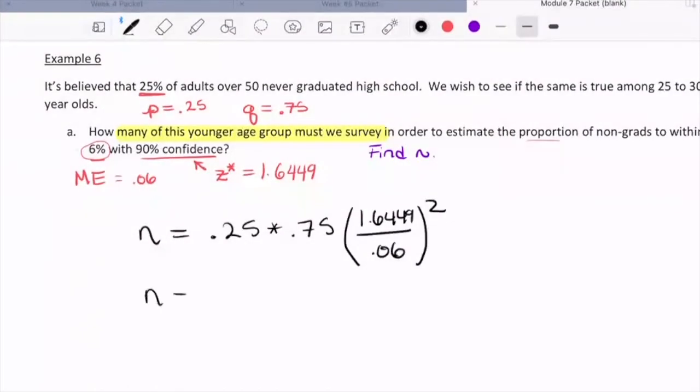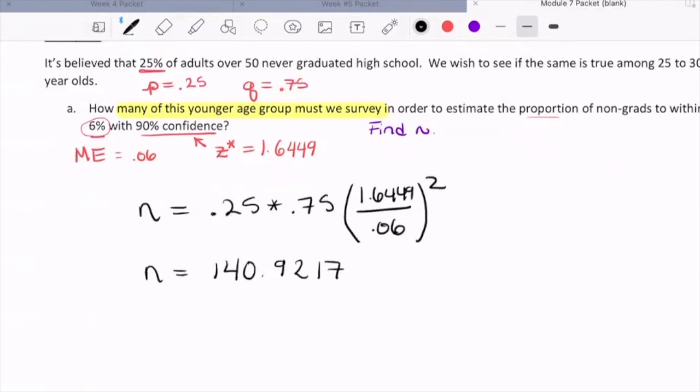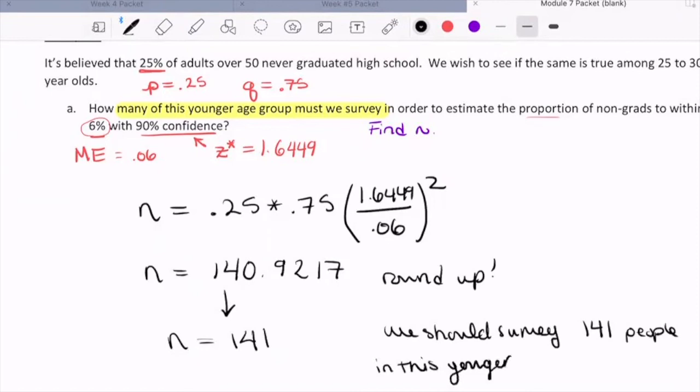So this means n is equal to 140.9217 if we want to copy four total decimal places. But what will the actual n need to be in our sample? We need to round up because we always round up for these calculations. So that would mean n is equal to 141. So to summarize, we should survey 141 people in this younger age group.